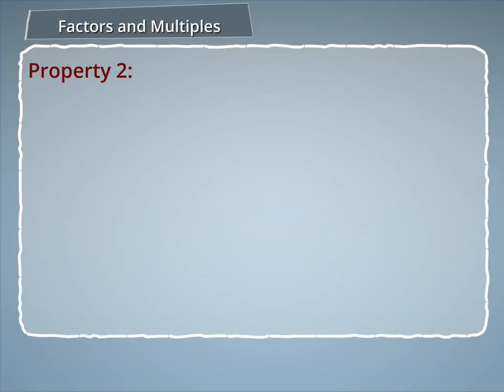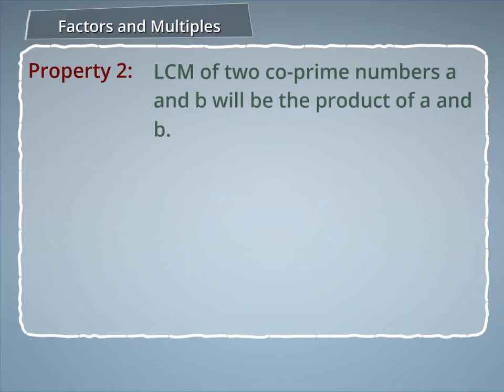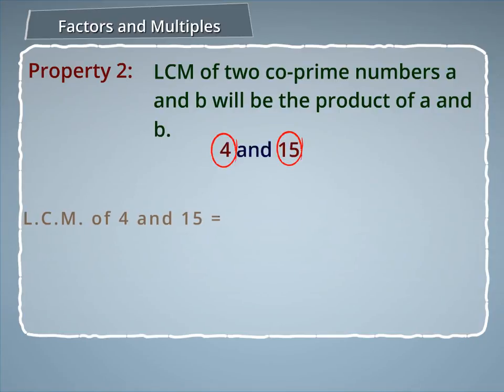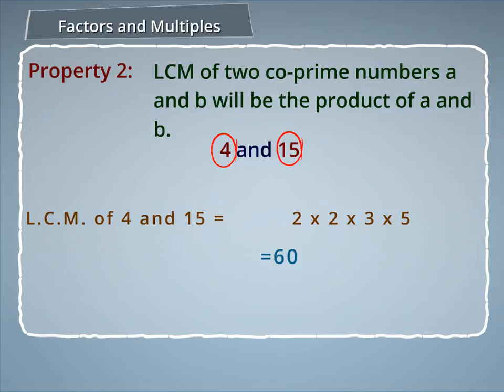Property 2: The LCM of two co-prime numbers A and B is the product of A and B. For example, for the co-prime numbers 4 and 15, their LCM is 2 × 2 × 3 × 5, which equals 60.